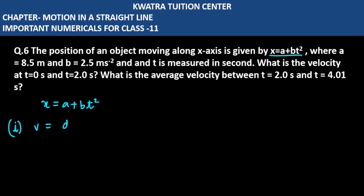Velocity, as I have told you, you have to take the derivative of position. If the derivative of position is taken with respect to t, what will happen? The constant a will become 0.